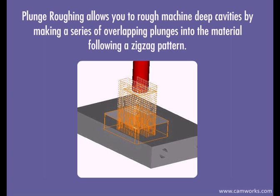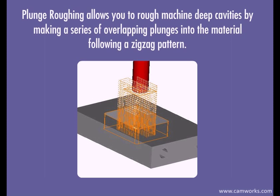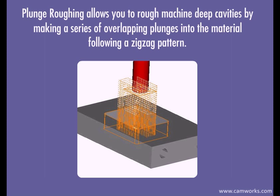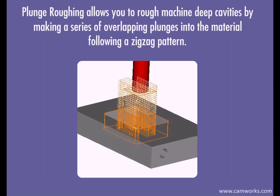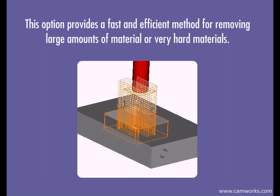Plunge roughing allows you to rough machine deep cavities by making a series of overlapping plunges into the material following a zigzag pattern. This option provides a fast and efficient method for removing large amounts of material or very hard materials.